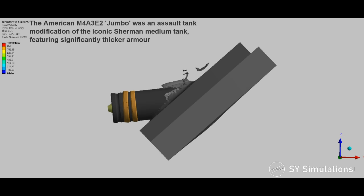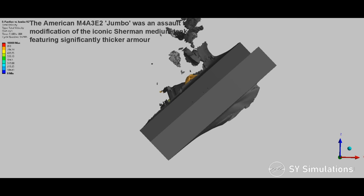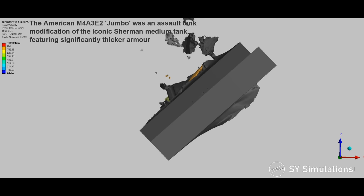The American M4A3E2 Jumbo was an assault tank modification of the iconic Sherman medium tank, featuring significantly thicker armor.